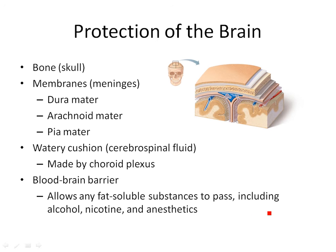The first thing we need to talk about when we talk about the brain is its protection. The brain is located inside the cranial cavity, and there are basically four layers of protection. You have the bony layer — your scalp and muscle, and then this bony layer.